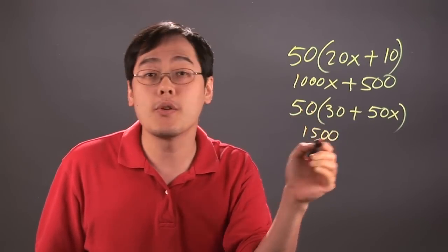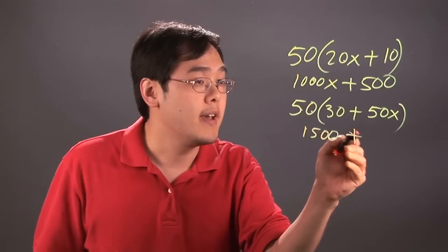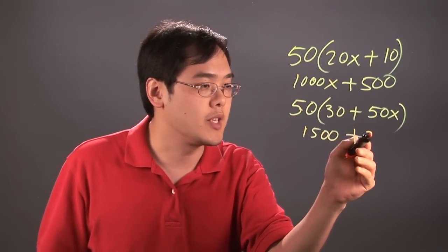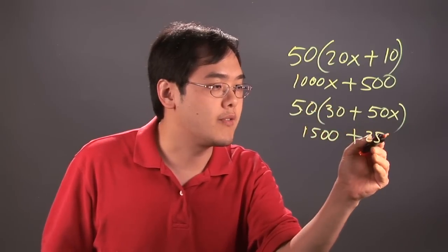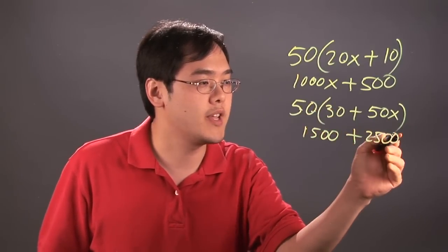The two zeros are there, so you know they'll be part of your answer. And then 50 times 50, same kind of idea, 5 times 5 is going to give you 25. And then the two zeros, so it's going to be 2500, and that's going to give you x.